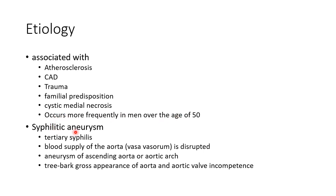Now let us see about syphilitic aneurysm. It is seen in tertiary syphilis. In this, the blood supply of the aorta — that is, vasa vasorum — is disrupted. This leads to aneurysm of the ascending aorta or aortic arch. There will be tree bark appearance of the aorta and aortic valve incompetence in syphilitic aneurysm.